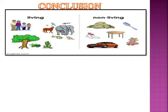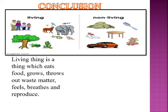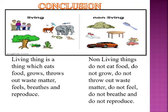Now we are at the conclusion. In this box, we have segregated living things and non-living things. A living thing is something which eats food, grows, throws out waste matter, feels, breathes and reproduces. Non-living things do not eat food, do not grow, do not throw out waste matter, do not feel, do not breathe and do not reproduce. Thus, we have understood the difference between living things and non-living things.